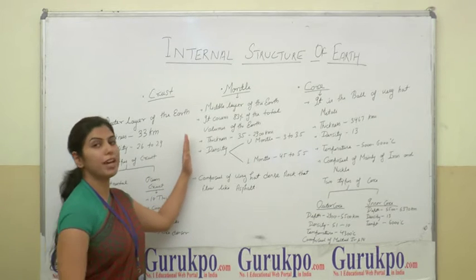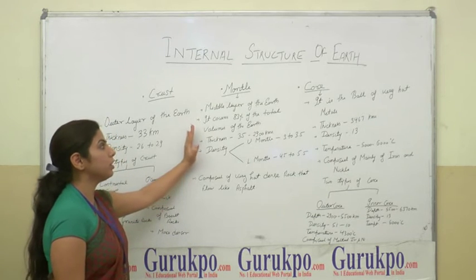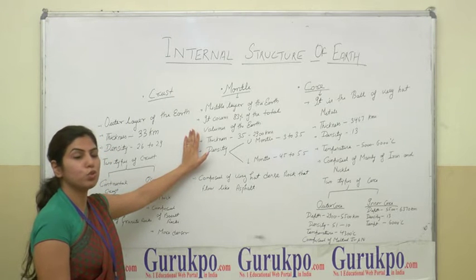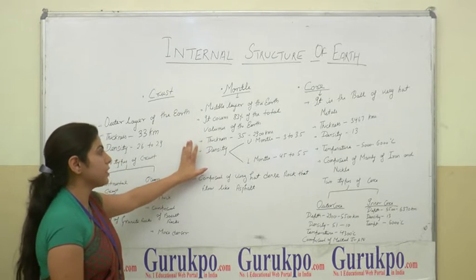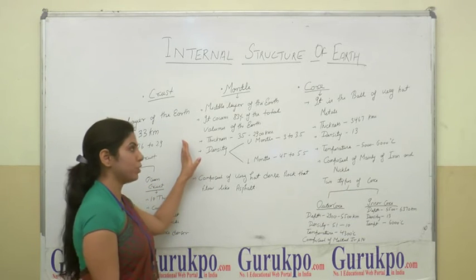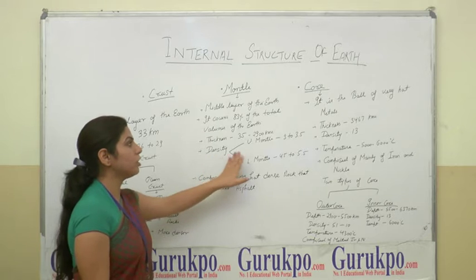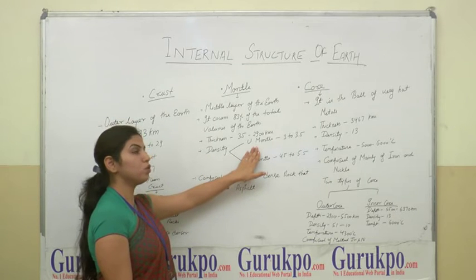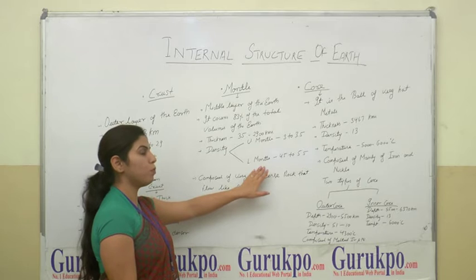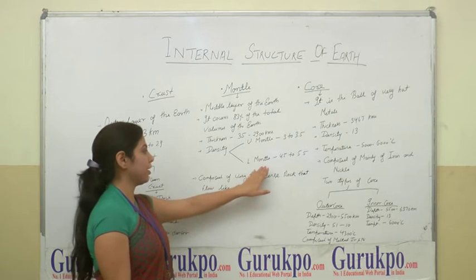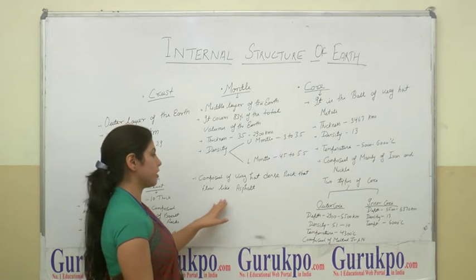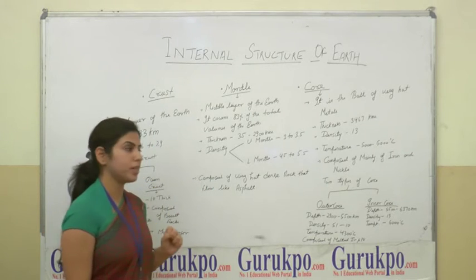The second one is the mantle — the middle layer of the earth. It covers 83% of the total volume of the earth. Its thickness is about 35 to 2,900 kilometers. The density of the upper mantle is 3 to 3.5 and the lower mantle is 4.5 to 5.5. The mantle is composed of very hot dense rock that flows in its part.